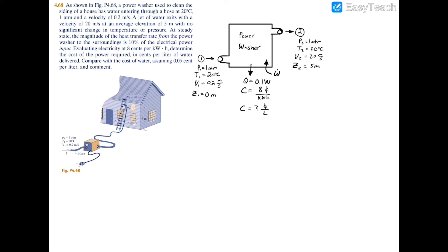I'll begin with the energy balance equation since I have parameters on both sides. The energy balance equation equals the heat transfer minus the power, plus the mass flow rate times a big bracket containing h1 minus h2, plus v1 squared minus v2 squared over two for kinetic energy, and gravity times the change in elevation z1 minus z2 for potential energy.